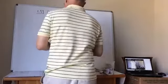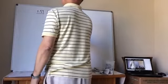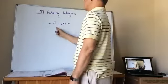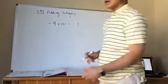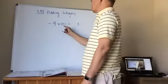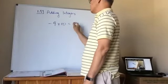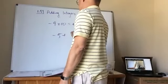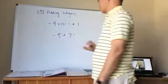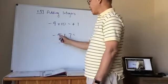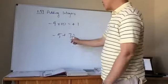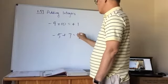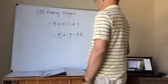If I have a different sign, I subtract the two numbers. For negative 9 plus 10, different signs, subtract to get 1. The larger number, 10, is positive — so the answer is positive 1. For negative 5 plus 7, different signs, subtract to get 2, and the positive side is larger so it's positive 2.